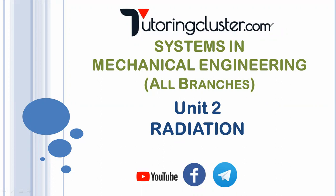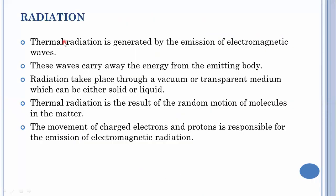Let us start with the topic radiation. Thermal radiation is generated by the emission of electromagnetic waves. Radiation is the energy emitted by matter in the form of electromagnetic waves. These waves carry away the energy from the emitting body. Radiation takes place through a vacuum or a transparent medium, which can be either solid or liquid. So radiation can even take place through vacuum — this is important.